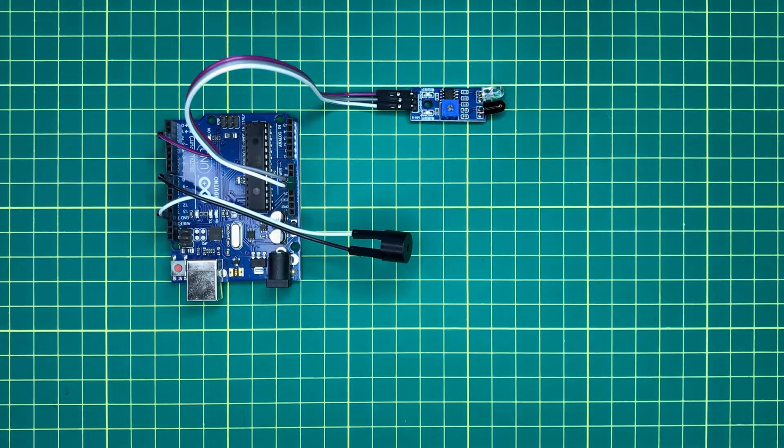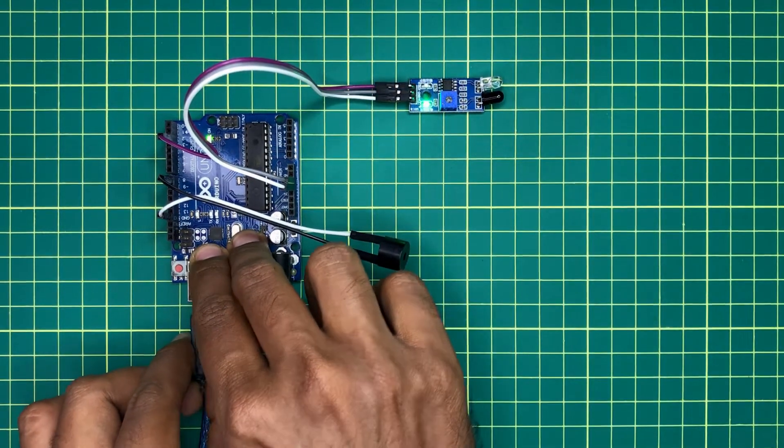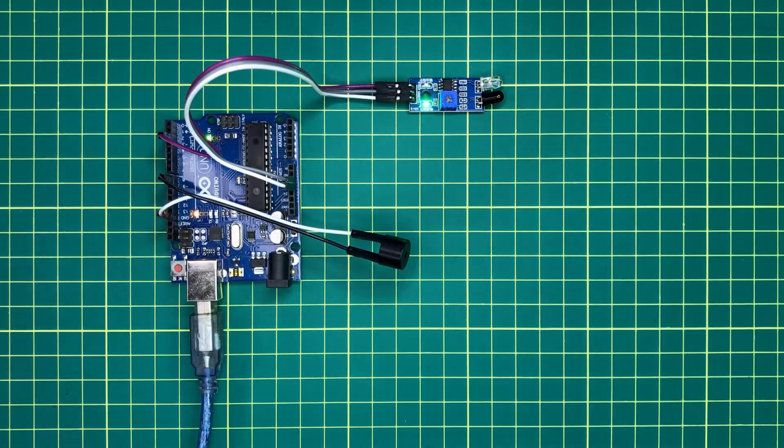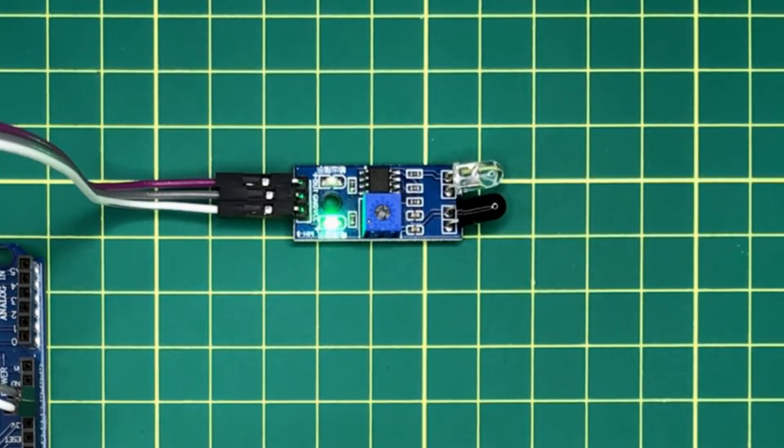Next, plug the Arduino board to the computer using a USB cable. You will see this power LED is indicating. The other LED is obstacle detection LED. We can use it to adjust the sensitivity of the module.